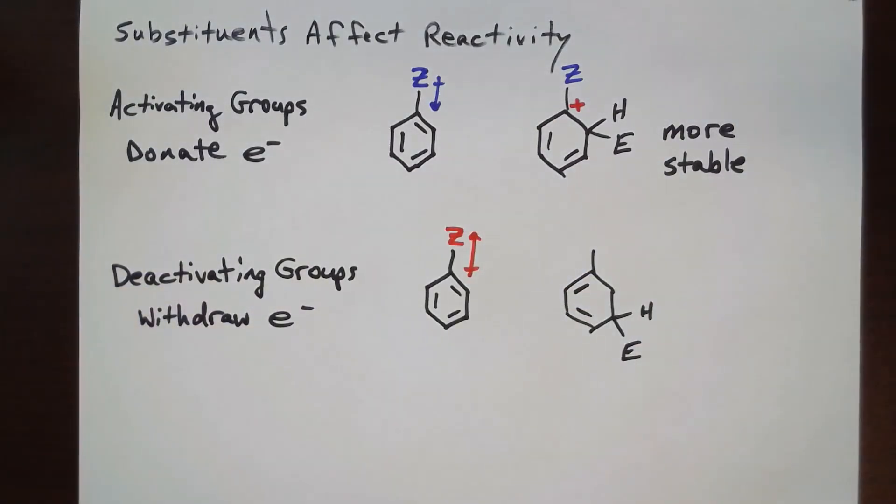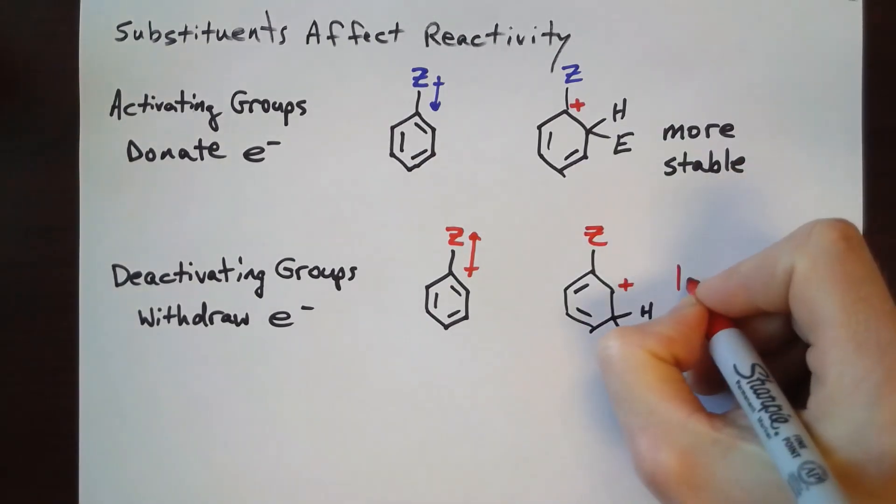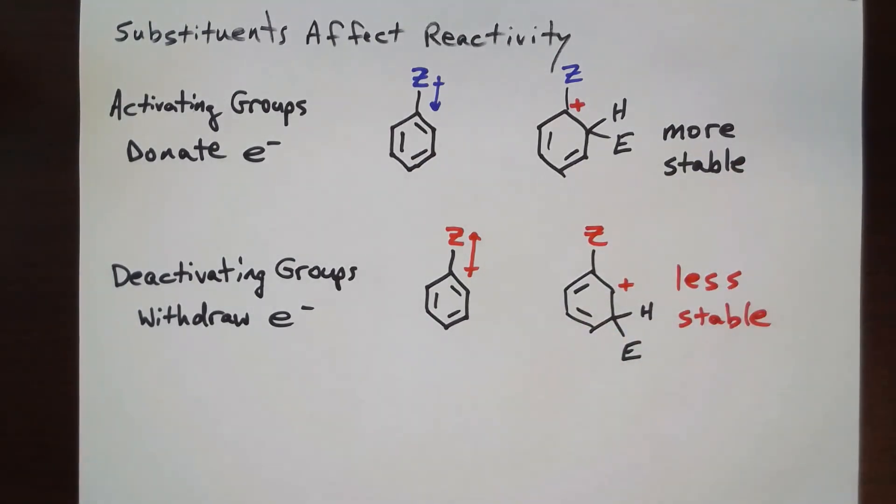Conversely, substituents that destabilize this positively charged intermediate decrease the reactivity of the benzene ring. Electron-withdrawing groups destabilize the intermediate. Donating and withdrawing electron density can be done by inductive and resonance effects.